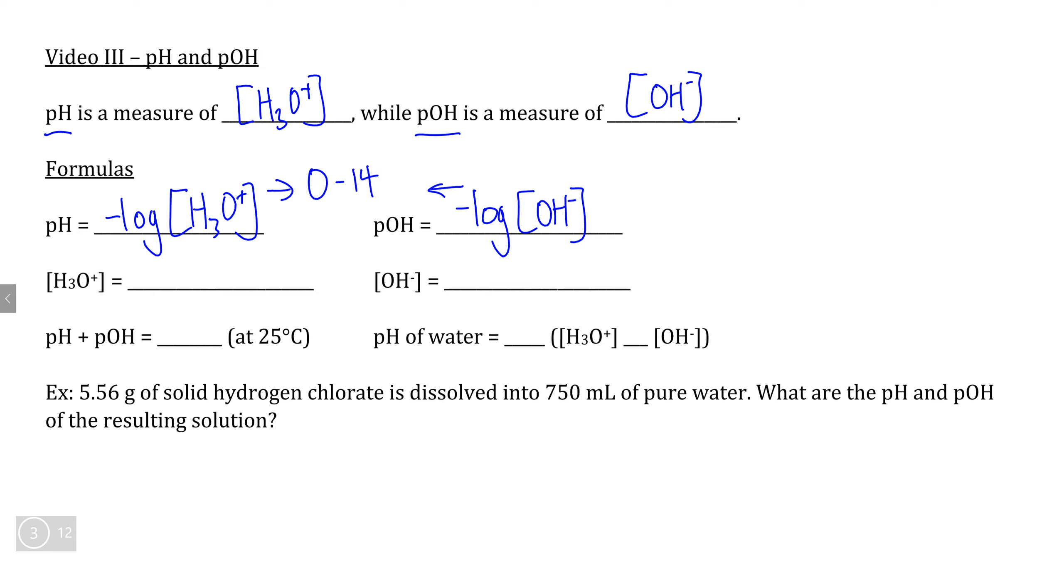What this number represents is an order of magnitude for the concentration. For example, if our pH is equal to 1, that means the concentration of hydronium in solution is equal to 10 to the negative 1 moles per liter. Therefore, a pH of 2 means the concentration of H3O+ is equal to 10 to the negative 2 moles per liter.